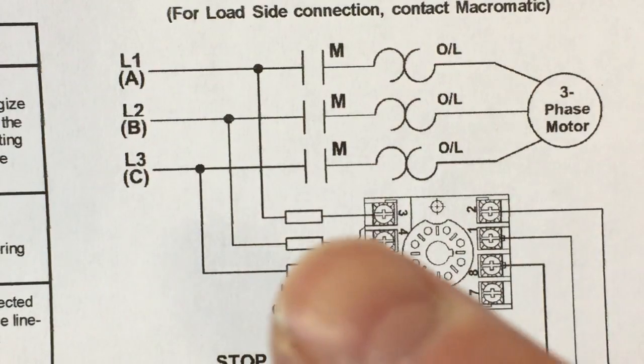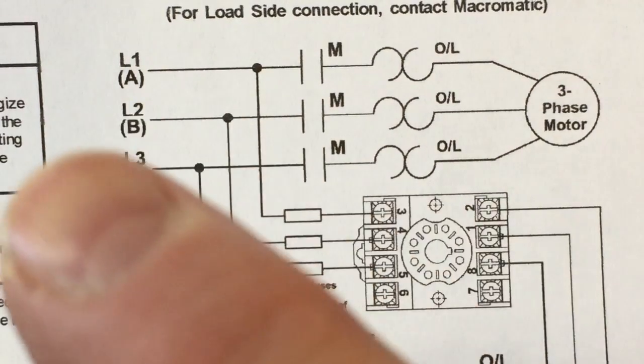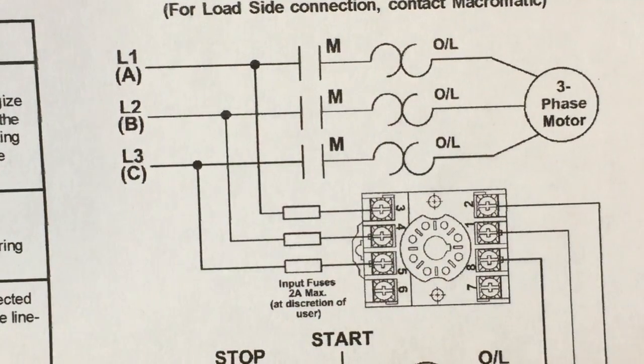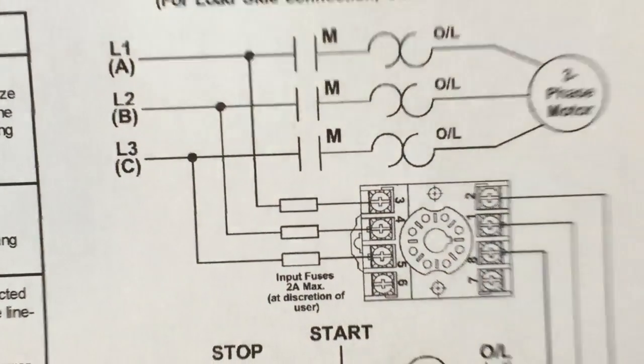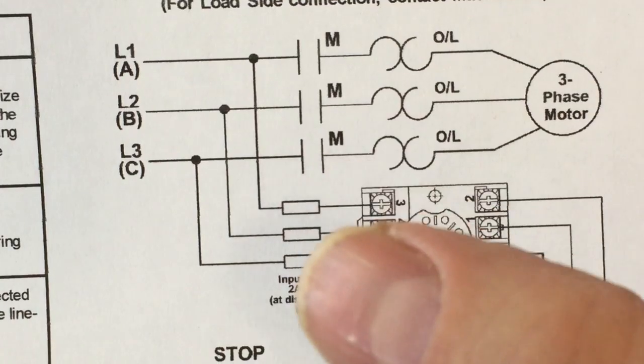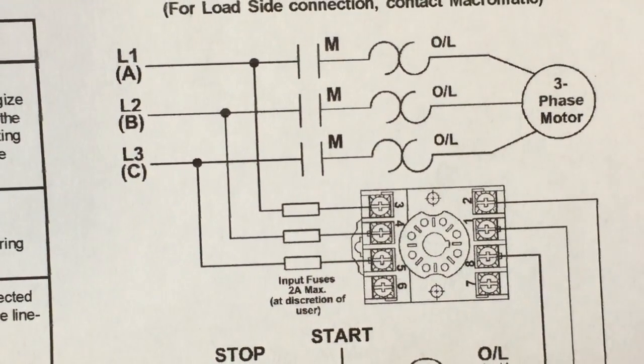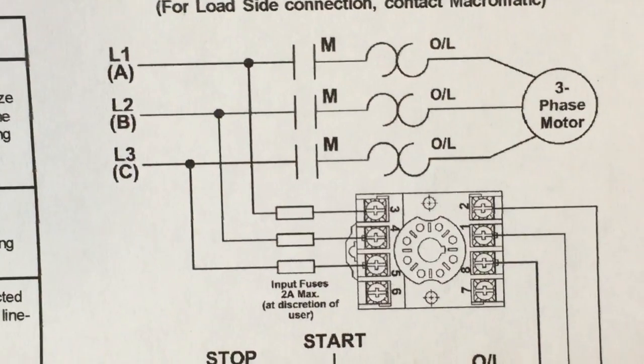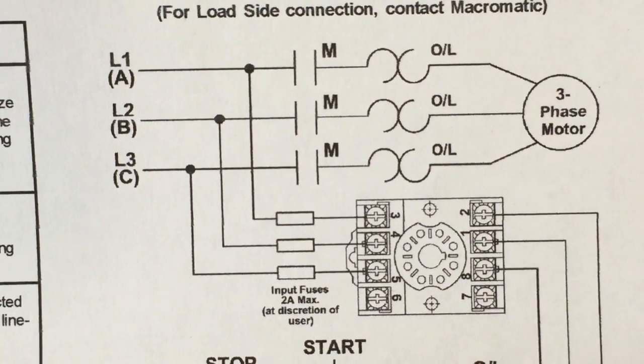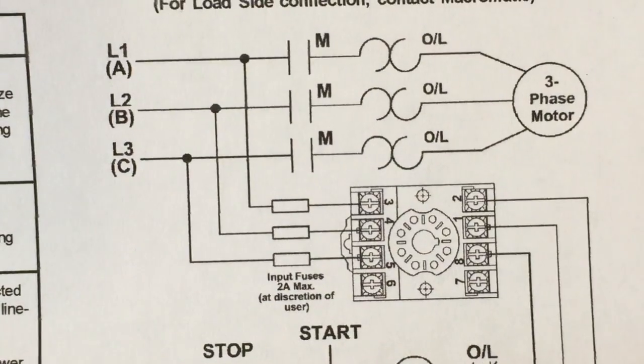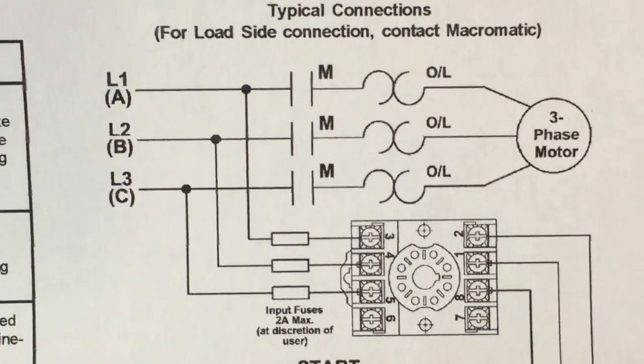L2, which is B phase, goes over here to pin 4. And L3, which is C phase, goes over here to pin 5. Now, what they've also shown here, right here are some inline fuses that's up to you if you want to put in there. And what those fuses would be for is to protect the device, the phase monitor relay itself, not the motor.